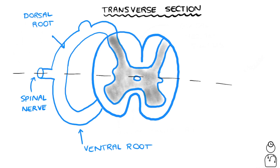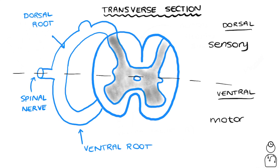Generally speaking, the dorsal structures are more concerned with sensory information processing, whilst the ventral structures are more concerned with motor information.